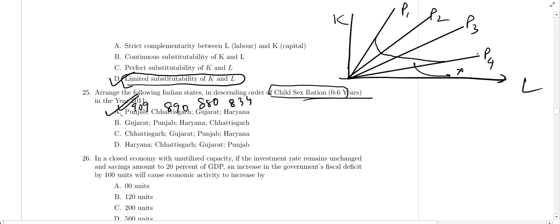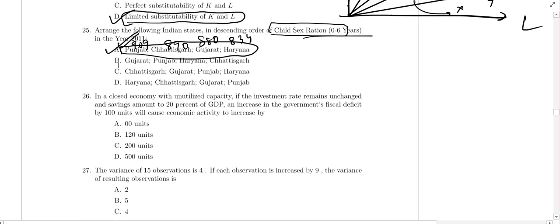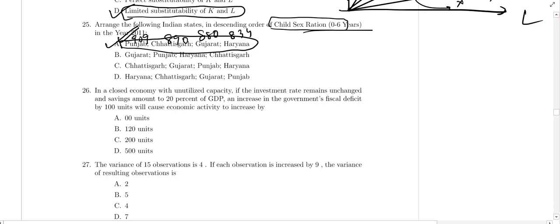Question 26: In a closed economy with unutilized capacity, the investment rate remains unchanged and savings among people is 20 percent of GDP. An increase in government fiscal deficit by 100 units will cause economic activity to increase by what?